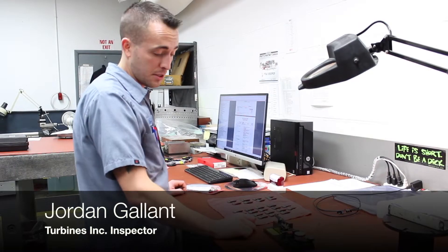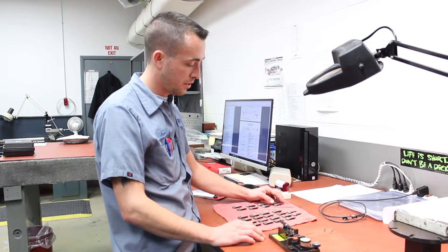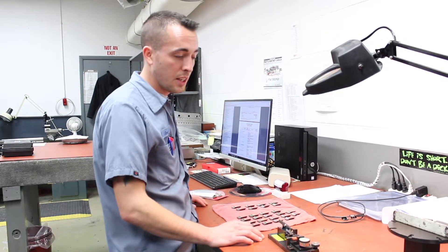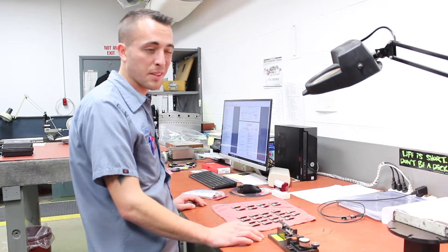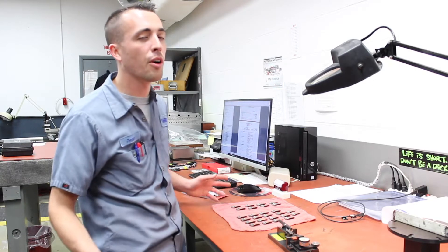These are compressor turbine blades out of a dash 20. These were sent to us by somebody that requests they be inspected and returned in overhaul condition.